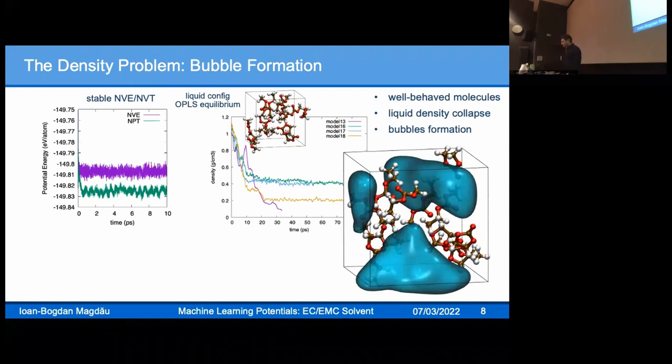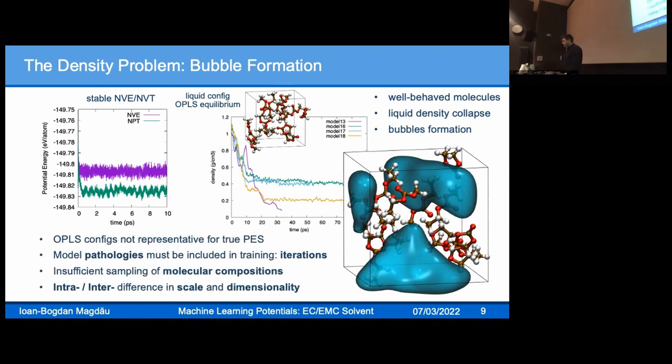Through a lot of work and careful analysis of all these trajectories, we identified some key factors that contribute to this issue. One is obviously the OPLS configurations are not representative for the true potential energy surface. This is the self-consistency problem we're all struggling with: trying to learn a potential energy surface in a region that's thermodynamically relevant, but you don't know either and you're trying to learn both at the same time.